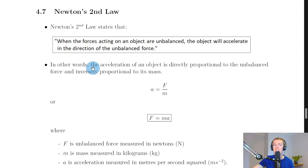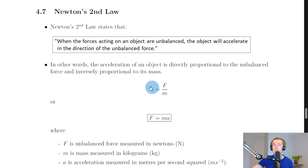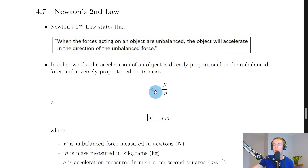Acceleration is also inversely proportional to mass, as shown by the equation: acceleration a equals unbalanced force F divided by mass m. We can see that a and F are directly proportional because F is on the top of the fraction. However, m is on the bottom, which tells us that a is proportional to one over the mass — i.e., inversely proportional to the mass.